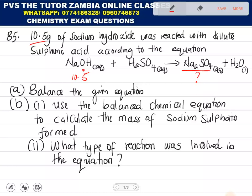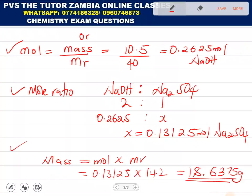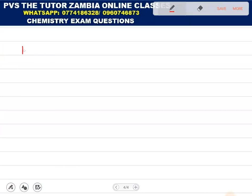Then the other part is, what type of reaction was involved in the equation? What type of reaction is this? This is a neutralization type of reaction. Because this is an acid-based type of reaction. So, this is a neutralization reaction.